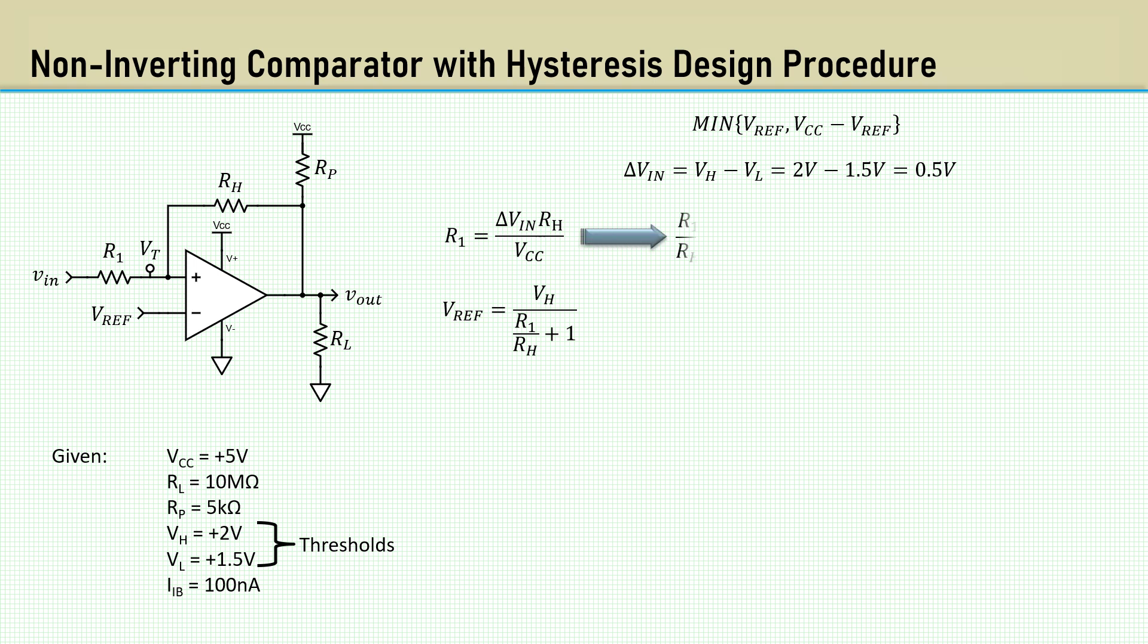Delta VN is 2 volts minus 1.5 volts which is 0.5 volts. Rearrange the equation for R1 to solve for the ratio of R1 to RH. That ratio comes out as 0.1. Now we know VH and the ratio of R1 and RH so we can solve for Vref as 1.818 volts.